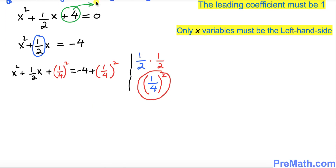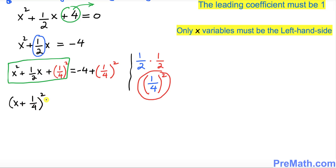As you can see, the left hand side represents a complete square of (x plus 1 over 4) squared, and on the right hand side we have negative 4 plus 1 over 16. Since we have a fraction, we can make negative 4 into a fraction by putting a 1 underneath.